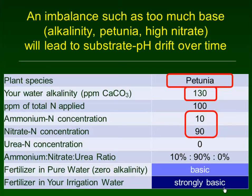If we load too many basic factors together — the same applies to too many acidic factors — we're going to have pH drift. For example: petunia is basic, alkaline water is basic, and low ammonium with high nitrate is also basic. Combining all of those things together, pH is going to drift up, and in this case we're going to end up with iron deficiency in our petunia crop.